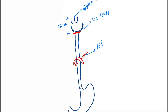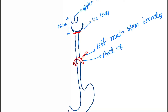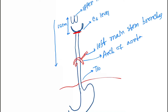This is the left main stem bronchus and this is the arch of the aorta. The last constriction is present at the diaphragm opening, at the T10 level. So the second constriction distance is 25 centimeters, and the third constriction distance is 40 centimeters. These are the three constrictions of the esophagus.